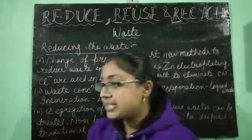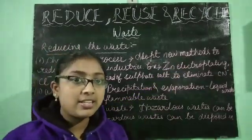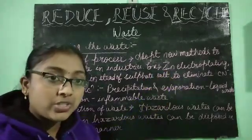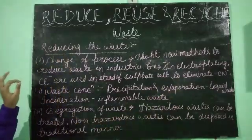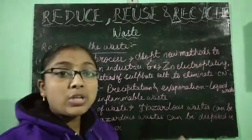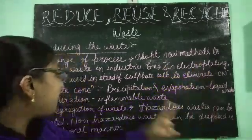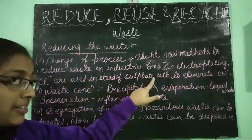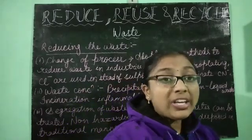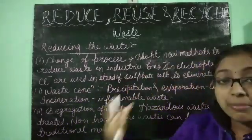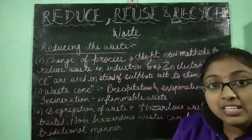One example given in the book itself is zinc electroplating — you must have learned about electroplating in science. In zinc electroplating industries, instead of using sulfate salt, if we use chloride, then it will help to eliminate cyanide formation. So it's an example of how we can change the elements used in the process to reduce the amount of hazardous waste that is produced.